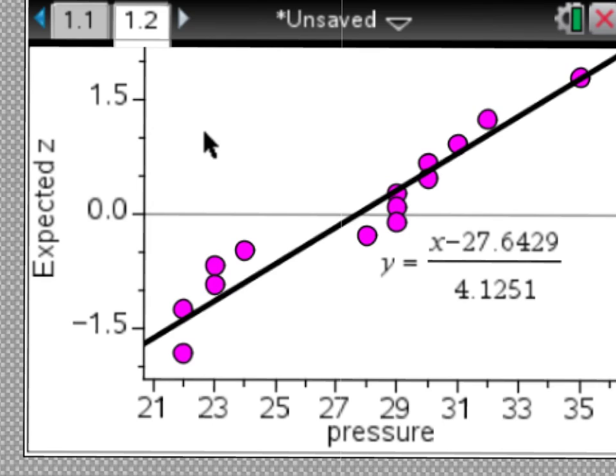This is a normal probability plot. This is a data graph that is generated by the Inspire or just about any computer or calculator will do this. And basically what it does is it graphs the data and we're looking for the data to lie along this line here. If it lies along this line without much variation, then we can say that the data is approximately normal.